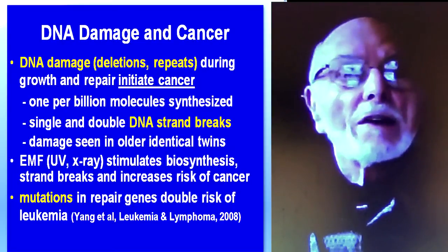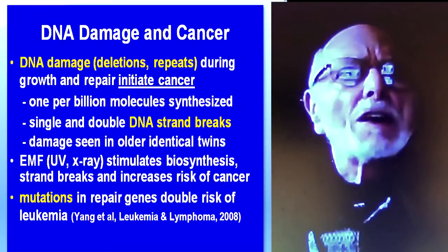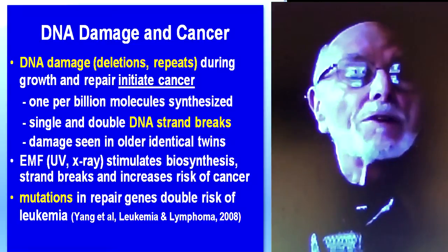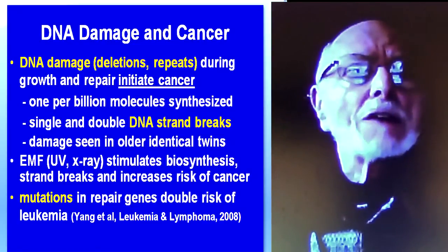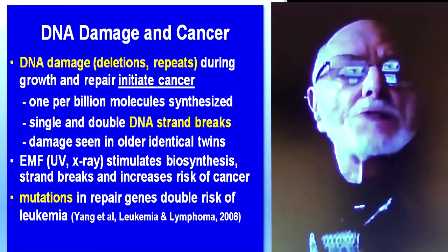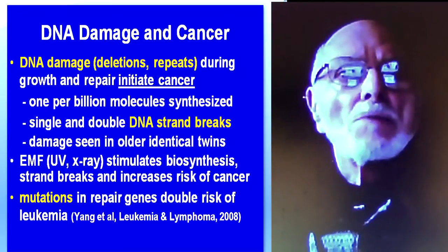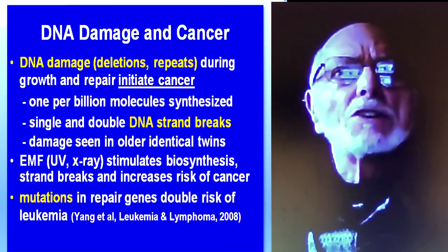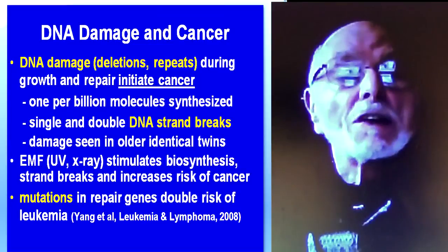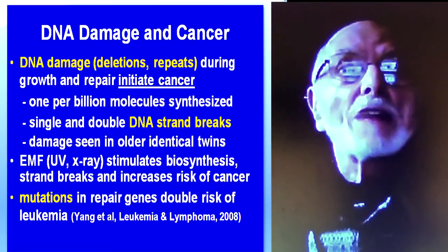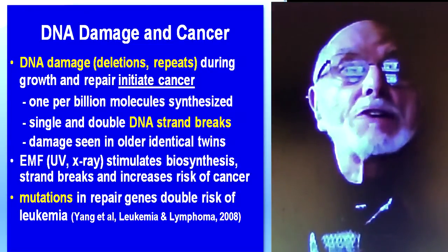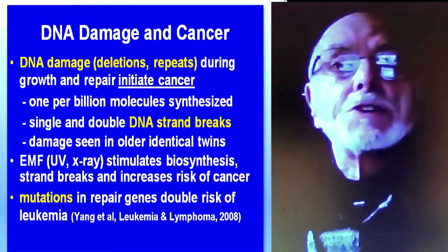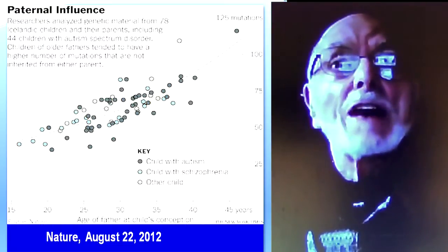There are a whole lot of data points on the next slide. It's a somewhat complicated study, but very important. This is a study done in Iceland where the population is very homogeneous — people are very closely related, their genes are very closely related, so if there's a damaged gene it shows up very easily. They've been doing a lot of genetic research, and this paper tracks mutations — damage that occurs in the parents of 78 children.